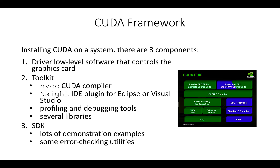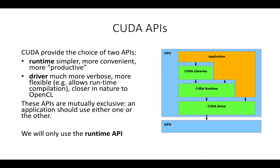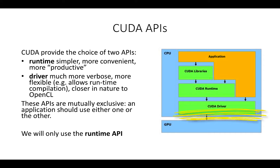The CUDA framework has three main components. First, the driver — a low-level software that controls the graphics card. Second, the toolkit — which includes the NVCC CUDA compiler, among other things. And third, the SDK — which includes code, examples, and utilities. CUDA provides two APIs: the runtime API, which is rather simple, and the driver API, which is a more low-level API. One important point is that these APIs are mutually exclusive — you need to decide which one you want to use. In this course, we will only use the runtime API.